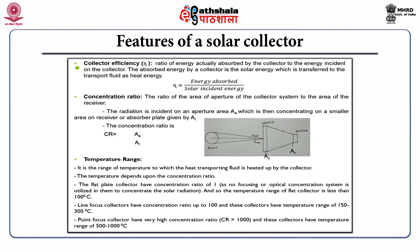The third feature is the temperature range — the range of temperature to which the heat-transporting fluid is heated by the collector. The temperature depends on the concentration ratio. The flat plate collector has a concentration ratio of 1, as there is no focusing or optical concentration system, so its temperature range is less than 100°C. Line focus collectors have a concentration ratio up to 100 and a temperature range of 150 to 300°C. Point focus collectors have a very high concentration ratio with CR greater than 1000 and a temperature range of 500 to 1000°C.